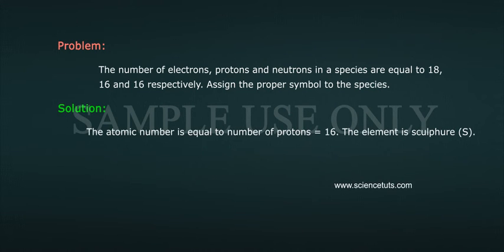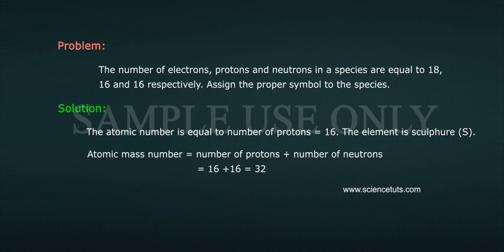The atomic number is equal to the number of protons is equal to 16. The element is sulfur, S. Atomic mass number is equal to number of protons plus number of neutrons is equal to 16 plus 16 is equal to 32.